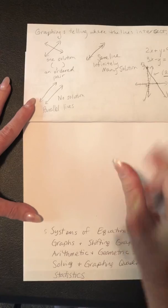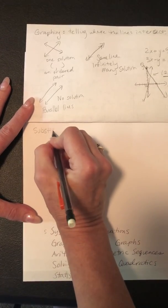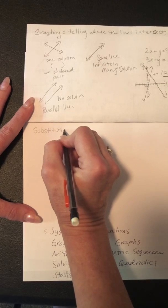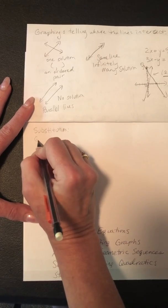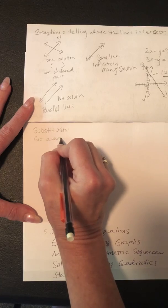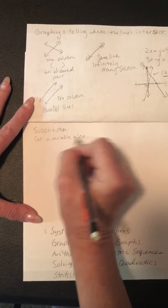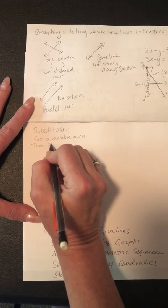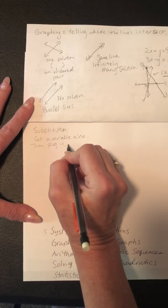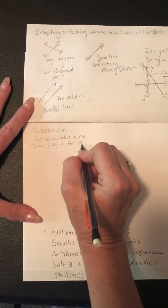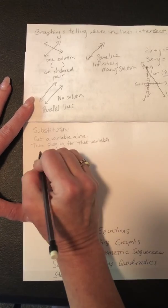The second way is substitution. Substitution is when you literally substitute. The first step is to get a variable alone. Then plug in for that variable in the other equation.